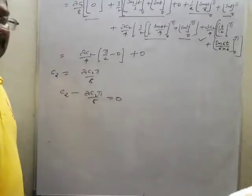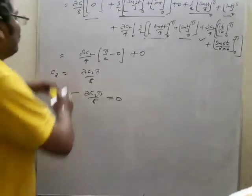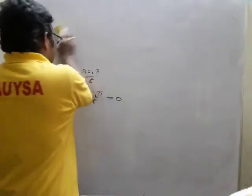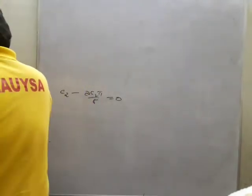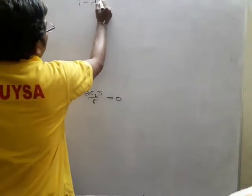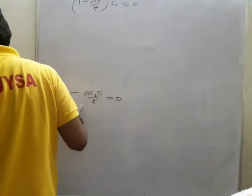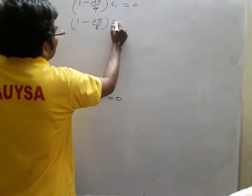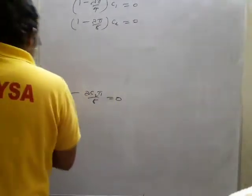This is the second equation which we got. Previously in the other video we got c1, and now we have c2. Based on these two equations we will try to find the values of λ as well as the eigenfunctions. We got two equations: one is (1 - λπ/4)·c1 = 0, and (1 - λπ/8)·c2 = 0, which is what we obtained from the previous one.